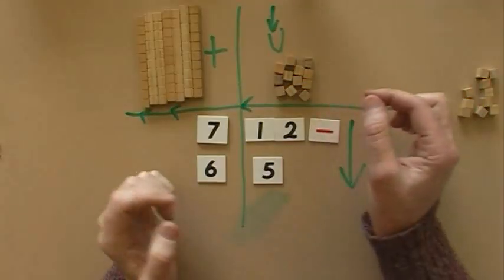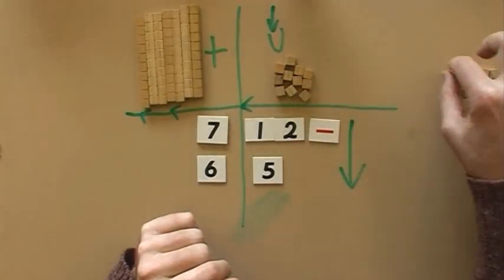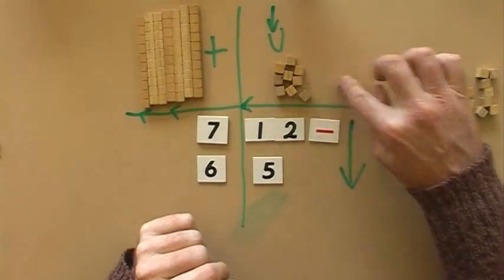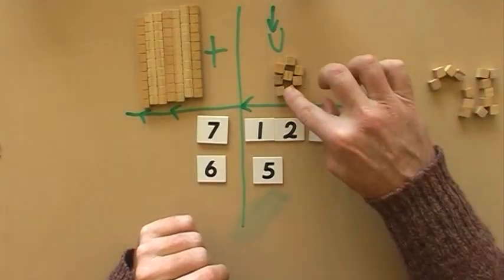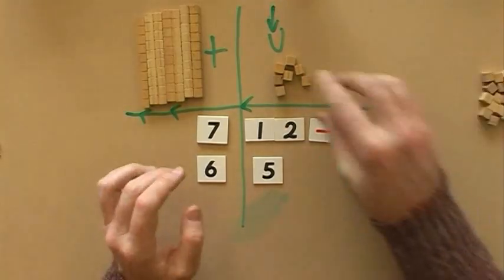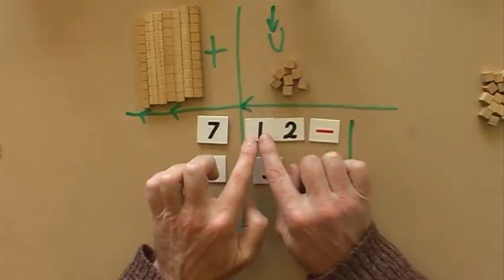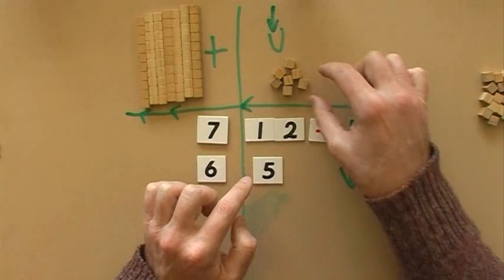Alright, so now I can take the 5 away. So let me do that: 1, 2, 3, 4, 5. Alright? Now I'm set up to do it. 12 take away 5 is how many? Well, what's left?